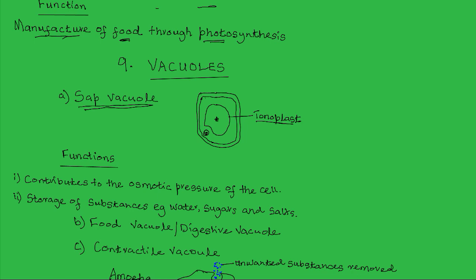The fluid enclosed within the sap vacuole is known as the cell sap. It contains water, dissolved salts, sugars, and some waste materials.